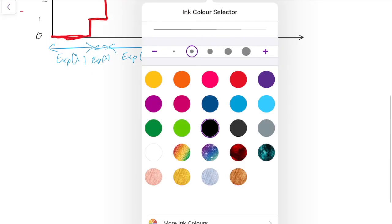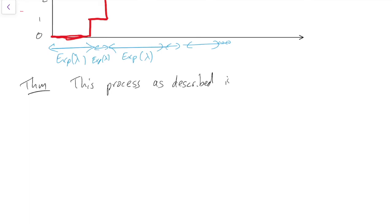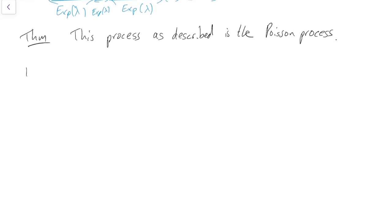We have a theorem here: the process that we've just described with the independent exponential holding times is the Poisson process — as in the Poisson process as we described it last time, having the independent Poisson increments. So how are we going to show that? Well, what we need to do first is show that the time until the first arrival is exponentially distributed. We mentioned in the previous subsection that for exponentially distributed things, it's normally easiest to look at the tail probability.